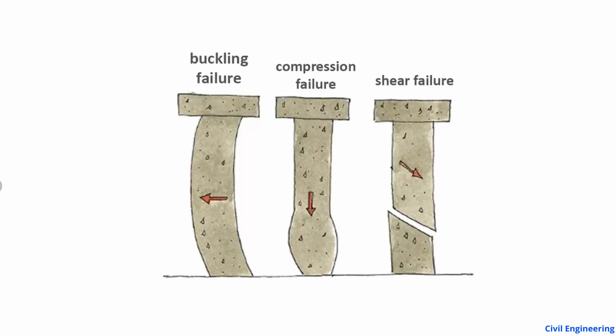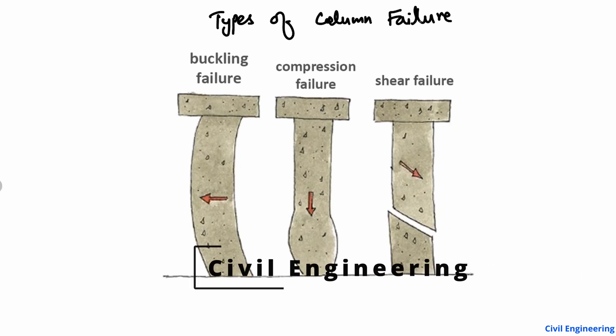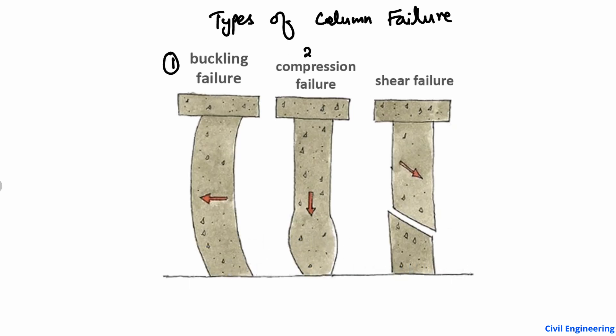Hello guys, welcome back to E7 Engineering YouTube channel. Please subscribe to our channel for daily engineering videos. Today we are going to explain the types of common column failure. There are three mostly common failures of columns: buckling failure, compression failure, and shear failure. I'm going to explain these three types with explanation and figures so it will be easy to understand.